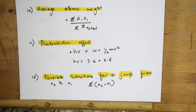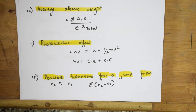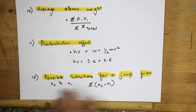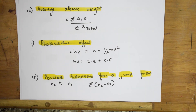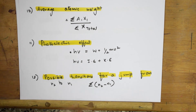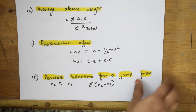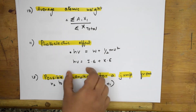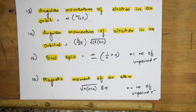For possible transitions — when a question asks you to find the number of possible transitions for a jump from n2 to n1 — apply the formula: number of transitions = Σ(n2 - n1). This word will appear directly in the numerical, so recognize it and apply accordingly.